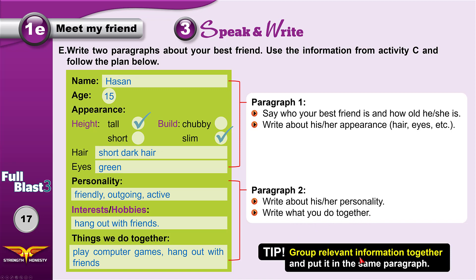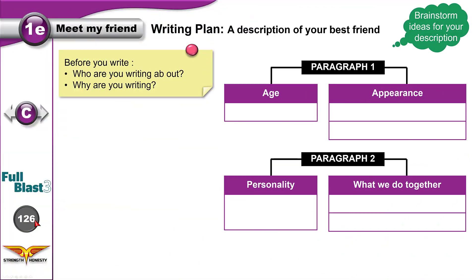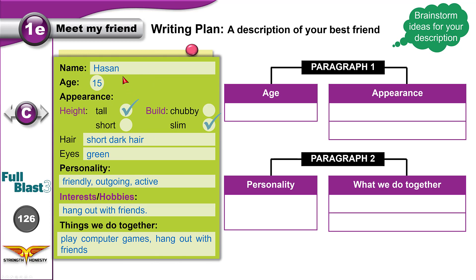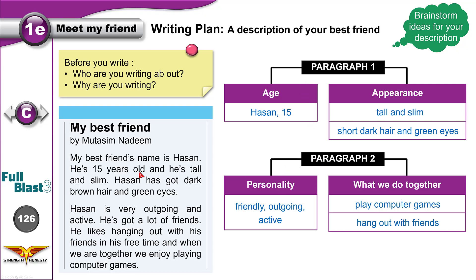Group relevant information together — information that is related to each other, like the appearance: put the build, the height, the hair, and the eyes all together in one paragraph. First go to the workbook, page 126, and complete the writing plan. Use the information from activity C to complete the plan, then we are ready to write the paragraphs.